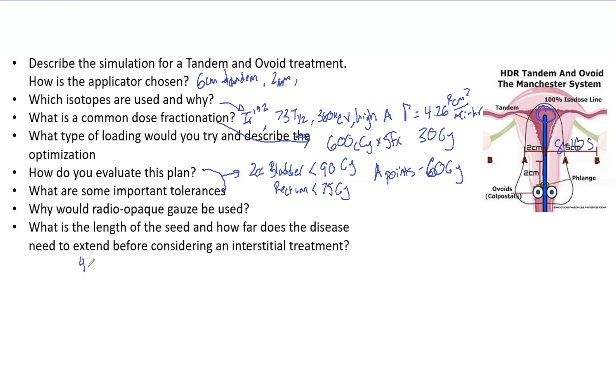What's the length of the seed? Typically that is 4 millimeters. According to ABS, they say that if the disease is less than or equal to 0.5 cm from the tandem you can use a T&O. If it's greater than 0.5 cm then you want to do an interstitial.